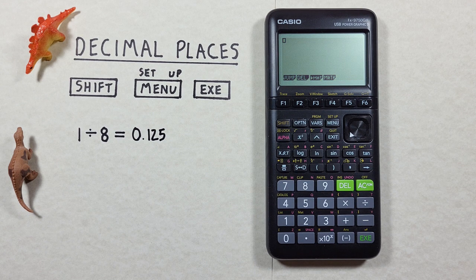Hello and welcome to HD Calcs. I'm Rick and in this video we're going to have a look at how we can set decimal places and rounding on the Casio FX 9750 G3 calculator.